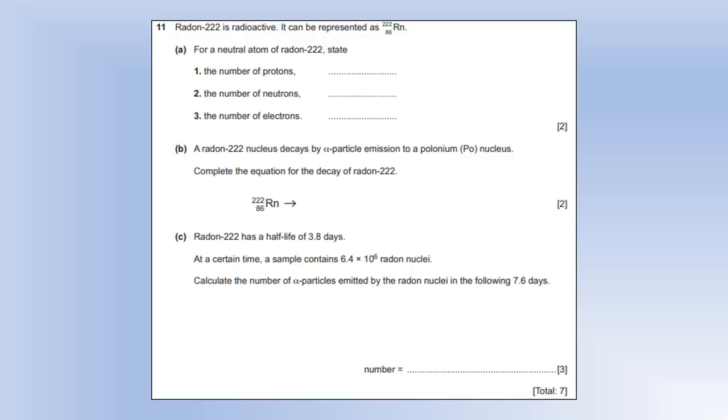Radon 222 is radioactive, and it can be represented with the nuclide notation 222 86 RN. For a neutral atom, radon 222 state the number of protons, well, that smaller number there is the proton number, so 86. The number of neutrons is going to be the nucleon number, the 222, minus 86, so that's 136. It tells us the atom is neutral, which means the number of electrons is equal to the number of protons.